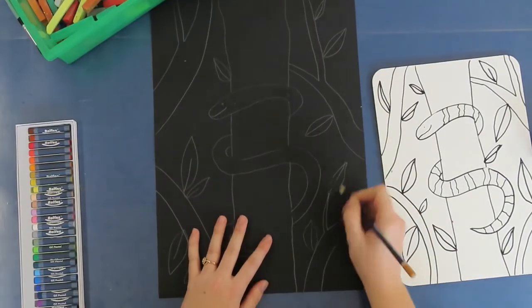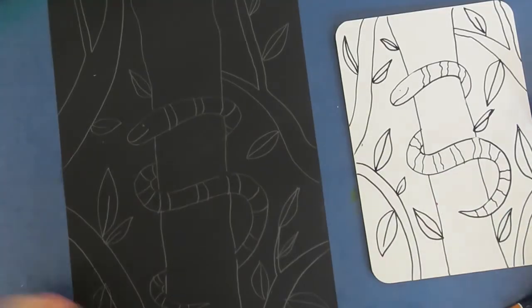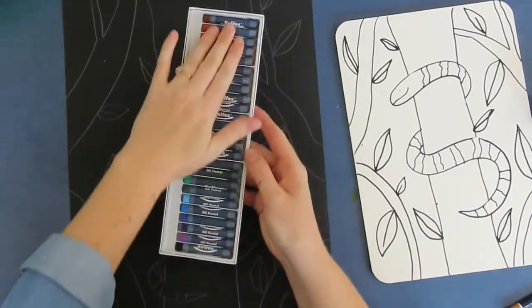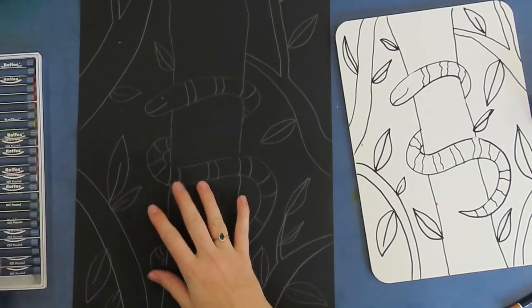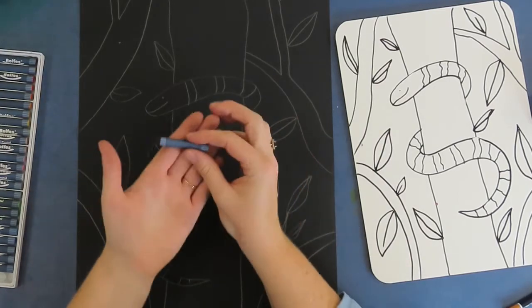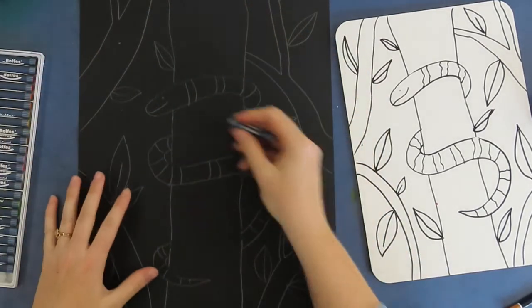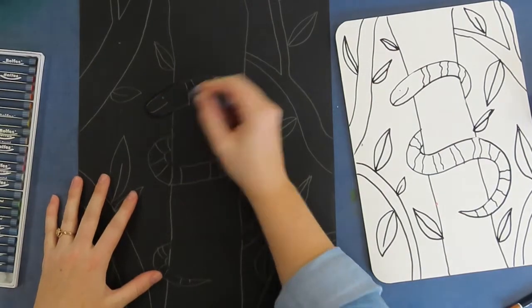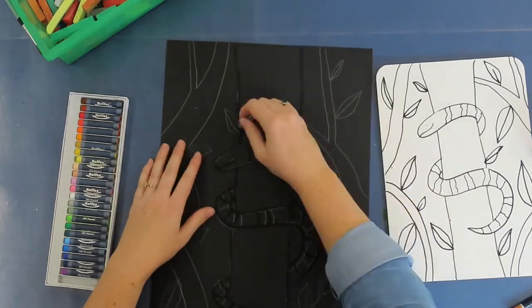Okay, so we're going to do the detail on our leaves, we're going to do the detail on our snake, and then we're going to move on to using the oil pastels. Now what I would like you to do is to take the black oil pastel and you are going to outline on top of your pencil. That means that you are going to trace the pencil that is on your piece of paper. You are not going to be coloring in. So when you have outlined your entire snake, we're going to move on to the chalk.